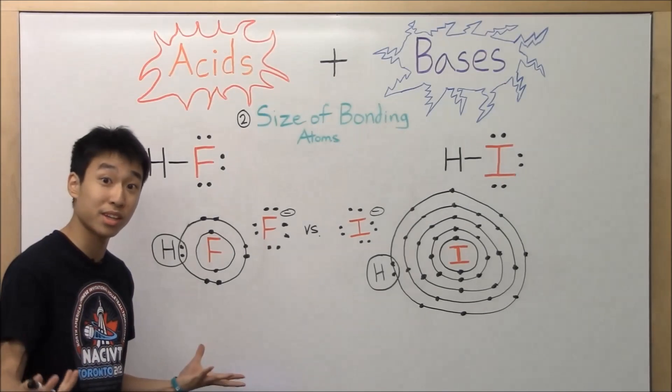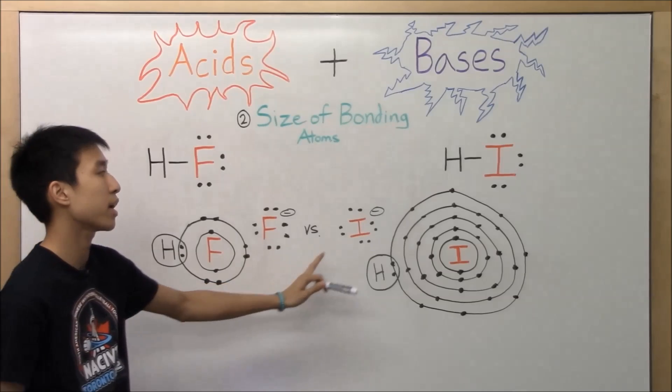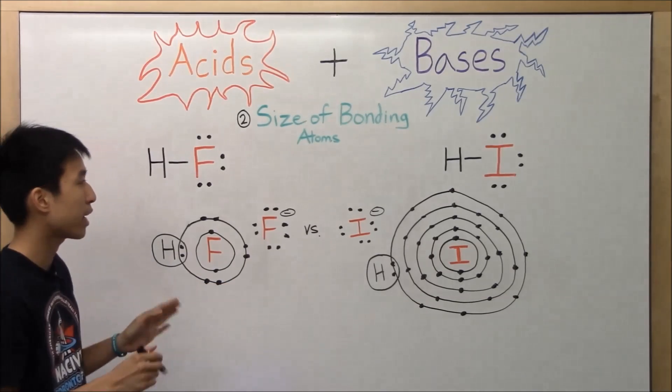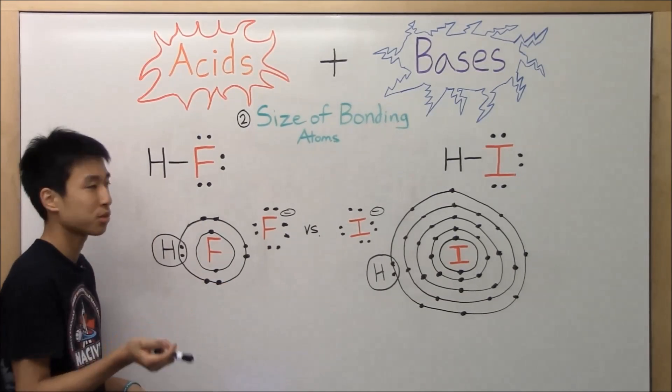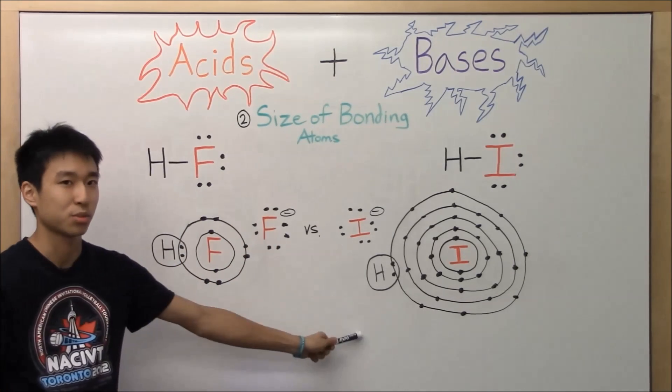And we're almost done. The next thing we have to worry about is the conjugate base forms, the fluoride ion and the iodide ion. But before we do that, I forgot to do this before. Whoops, my bad. But HF, HI, which one's the stronger acid?